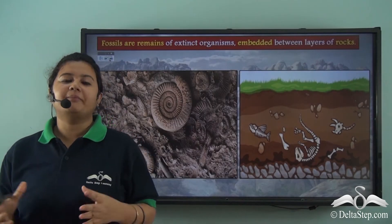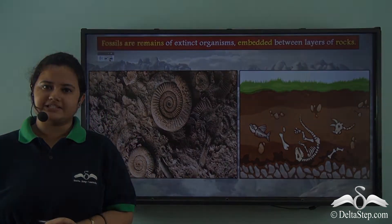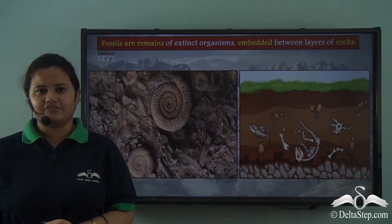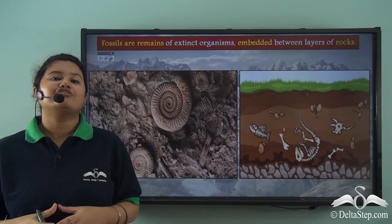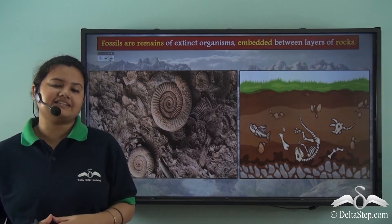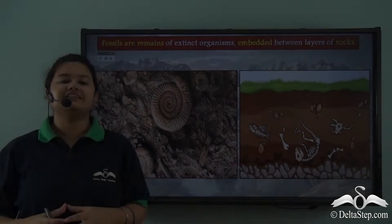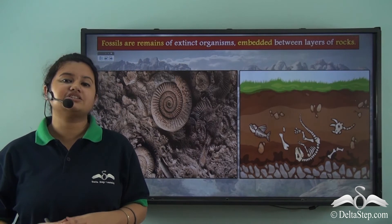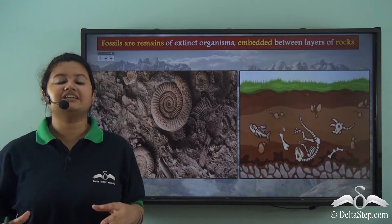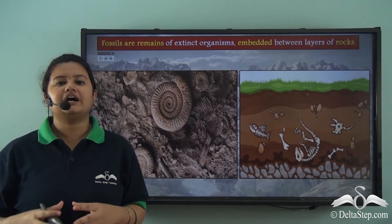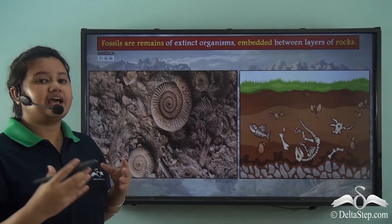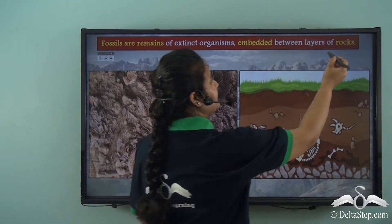We get to know about dinosaurs from fossils. In the early 19th century, fossils of dinosaurs were discovered. Fossils are remains or traces of dead plants and animals that existed millions and millions of years ago. The dead remains of these organisms were trapped in the layers of rocks and got deposited in the earth's crust along with other sediments. Thus fossils are the remains of dead organisms that are embedded between the layers of rocks.